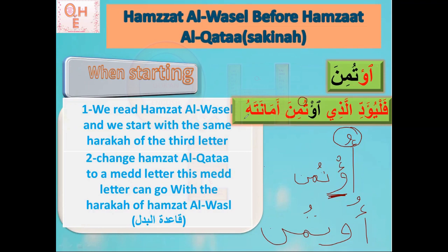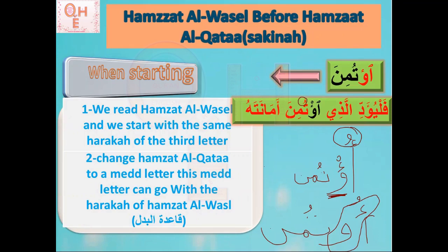Why do we call it Qa'idat al-Badal? Because we change Hamzat al-Qata to a madd letter — number one. Number two, I now have Madd Badal: a hamza followed by a madd letter, which is Madd Badal at two beats. So the word reads: 'U-tumina.' When I stop and start, it becomes: 'U-tumina.' This is clear for this word, insha'Allah.